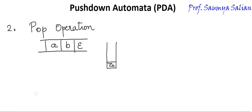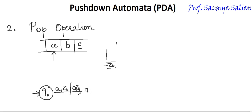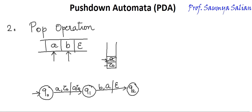Now let's understand how pop operation is done. Starting from Q0 with read header reading A and stack top Z naught, push A onto stack — push A on top of Z naught, reach Q1. Now reading B with stack top A. On reading B, pop out A from the stack. To perform pop operation, write epsilon and read state Q2. So A will be popped out from the stack. That is how pop operation is done.